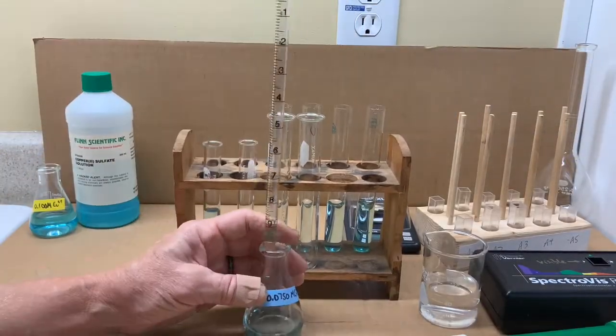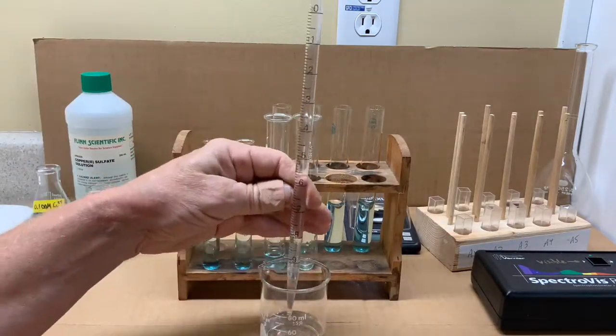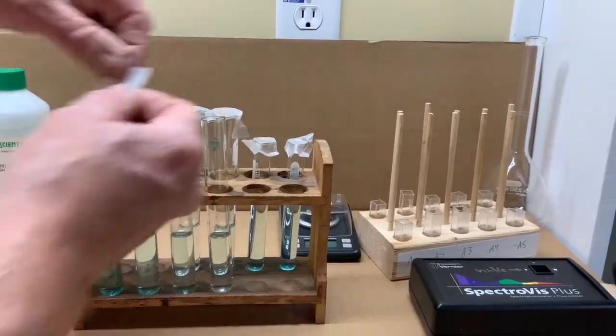That will be repeated for the second stock solution, 0.075, and you can see in fast speed the stock and then the water to again make the four dilutions.